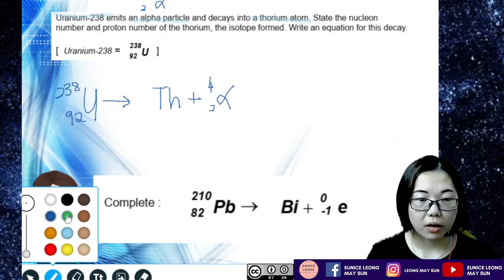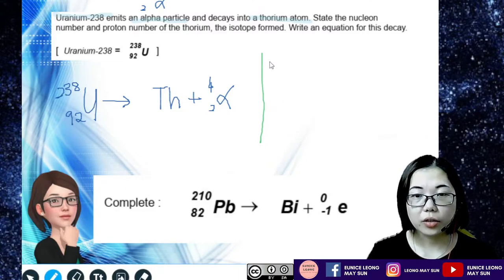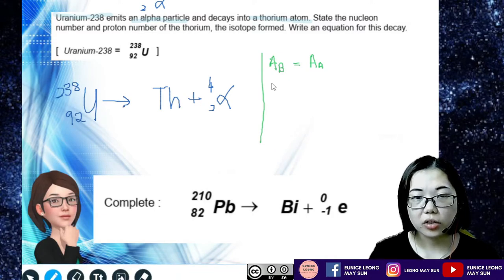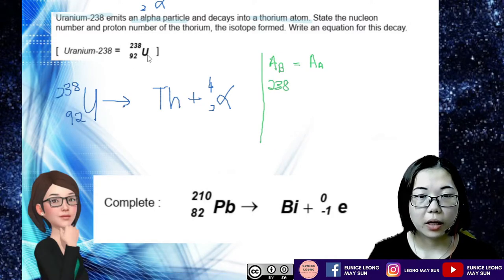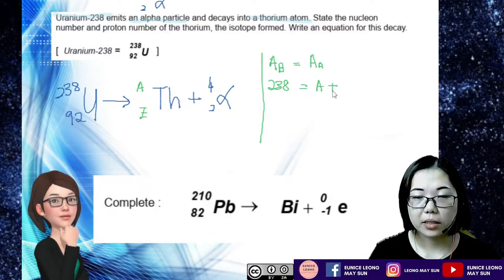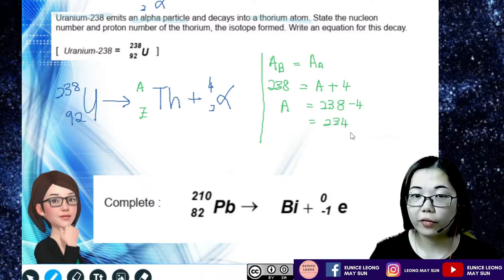I'm going to write using a green color pen to show how to do that. The nuclear number before the reaction has to equal the nuclear number after the reaction. Before the reaction we have 238. Calling thorium's values A and Z, we get 238 equals A plus 4. So thorium's nuclear number is 238 minus 4, which equals 234.